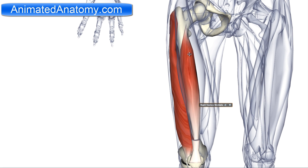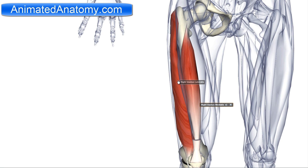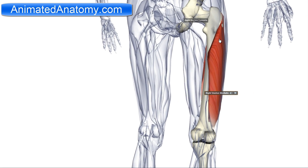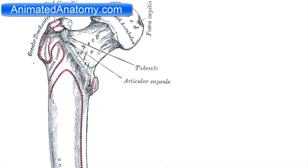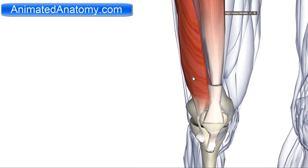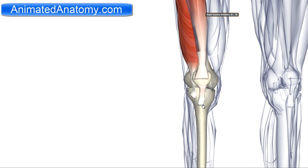Then we also have the vastus lateralis. The vastus lateralis has its origin on the greater trochanter of the femur and the intertrochanteric line. It also has its origin back here on the linea aspera. Here we see the femur from behind with the linea aspera, and from the front showing the greater trochanter and the intertrochanteric line. This muscle inserts on the patella and then via the patellar ligament into the tibial tuberosity.